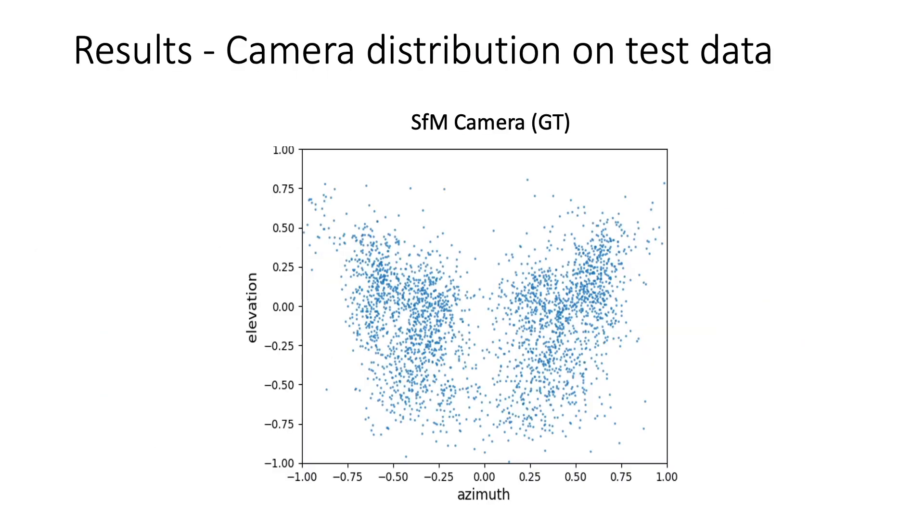Now some results. We visualize the distribution of camera poses on the test set of the bird's cub dataset as a scatterplot of azimuth on the x-axis and elevation on the y-axis.